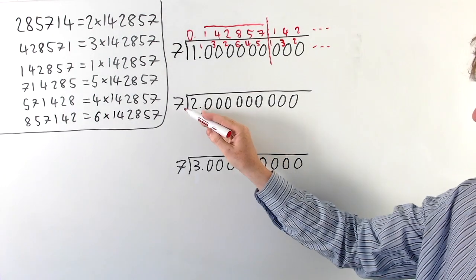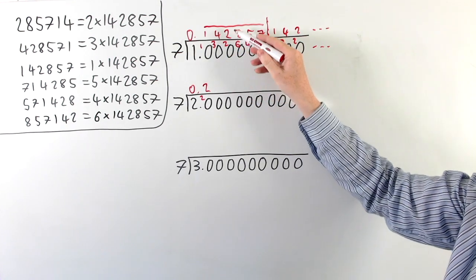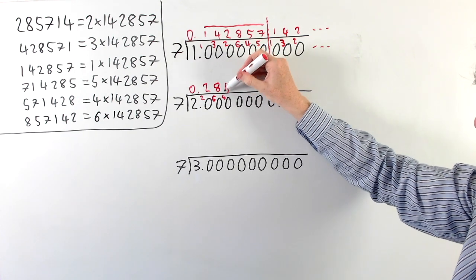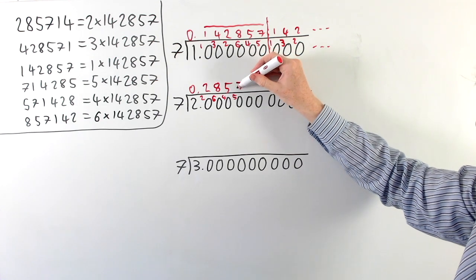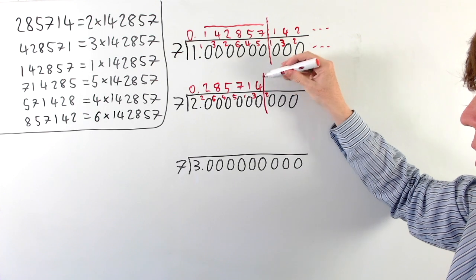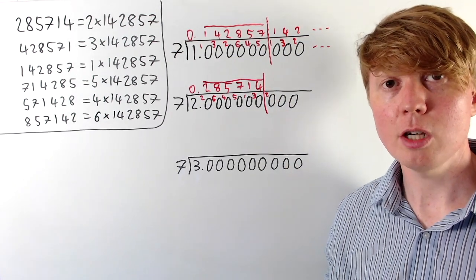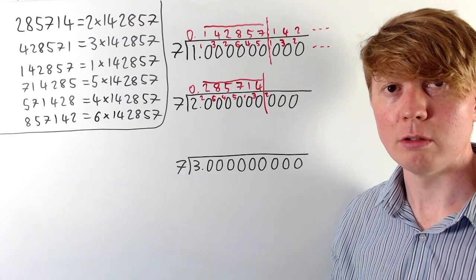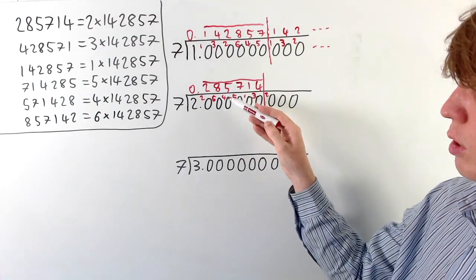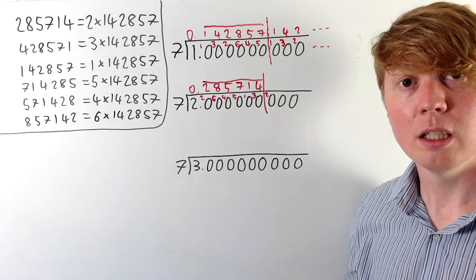Now for 2/7: 7 doesn't go into 2, remainder 2. 7 goes into 20 exactly 2 times — we're already in familiar territory — with remainder 6. 7 goes into 60 eight times with remainder 4. Goes into 40 five times with remainder 5. 7 goes into 50 seven times with remainder 1. Goes into 10 once with remainder 3. And 7 goes into 30 four times with remainder 2, then we start to repeat. So we get 0.285714 recurring.